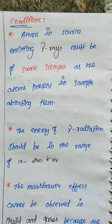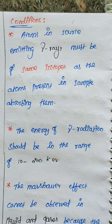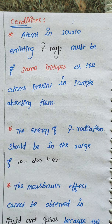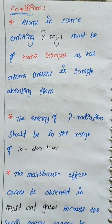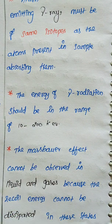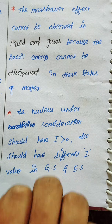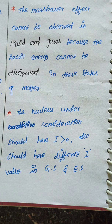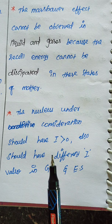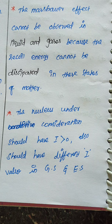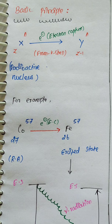So, atoms in the source emitting gamma rays must be of the same isotopes, and the isotopes present in the sample must also be the same. Now, see the basic principle of Mössbauer spectroscopy.